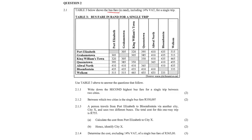Question 2.1.1: Write down the second highest bus fare for a single trip between two cities. The second highest bus fare — the highest as you can see is 515, and the second highest is going to be 465.